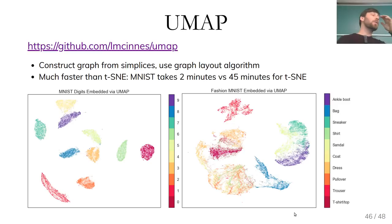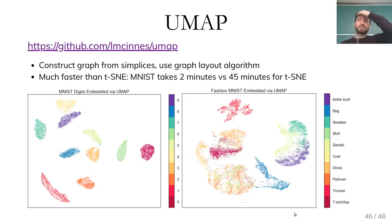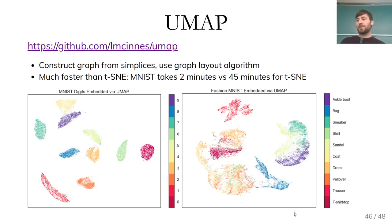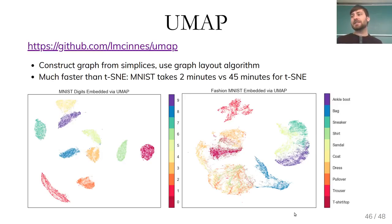There are two newer algorithms worth mentioning. One is UMAP, done by Leland McInnes, with a nice implementation available. On MNIST digits embedded with UMAP, it looks similarly nice to t-SNE. His UMAP implementation took two minutes whereas a t-SNE implementation took 45 minutes — quite a big difference in performance.